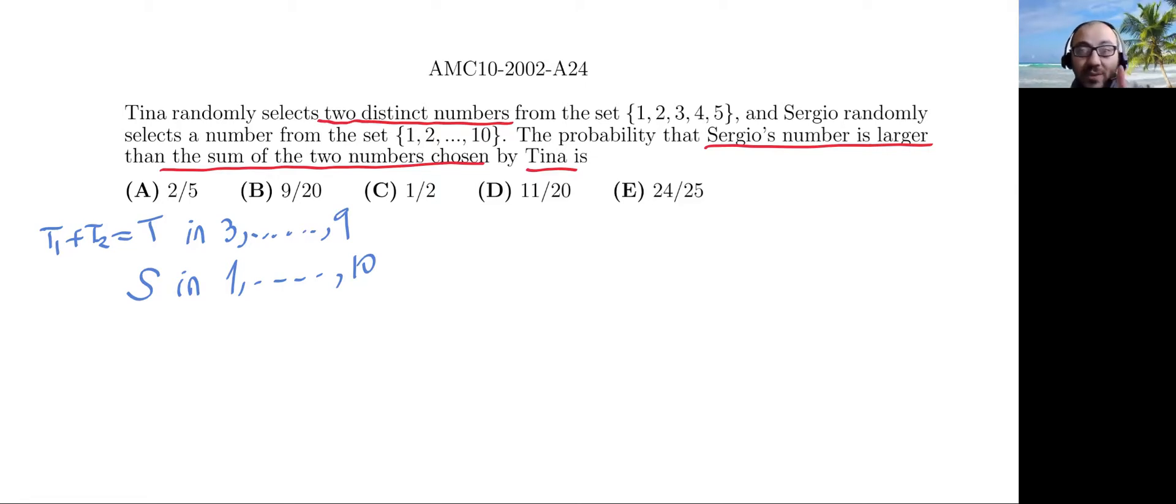And here we have the same case. There's only one case to get 3, 1 plus 2. There's also one case to get 9, 4 plus 5, right? So 3 and 9 have the same number of cases or the same probabilities. And the same way you can check that 4 and 8, 5 and 7 have the same probability, so the distribution for T is symmetric around 6.